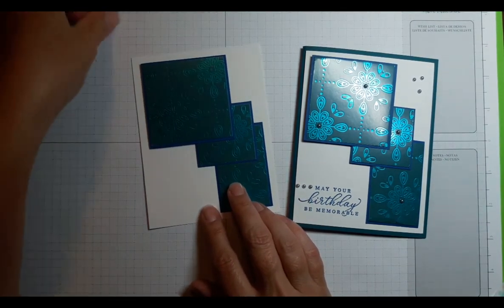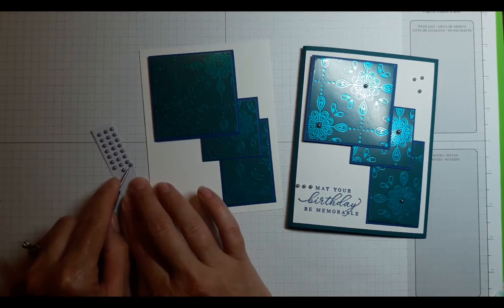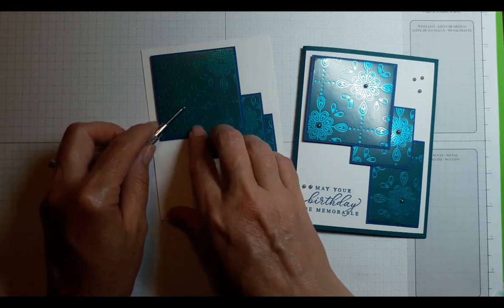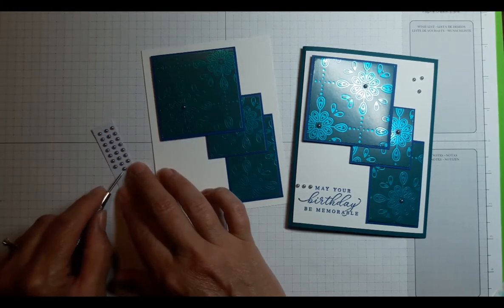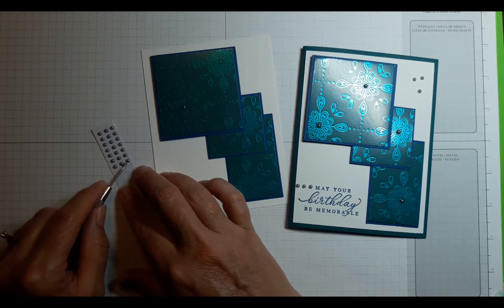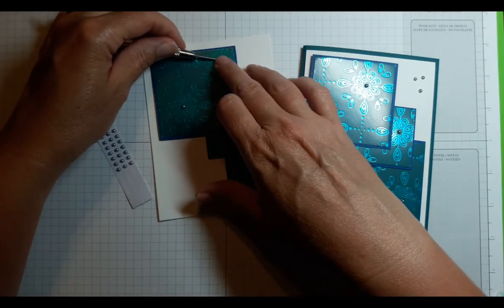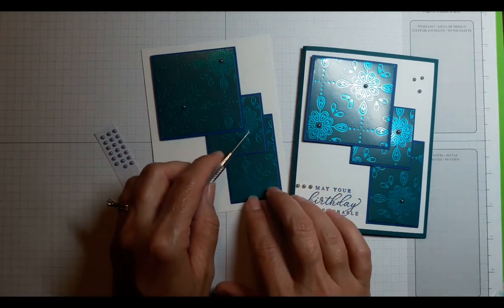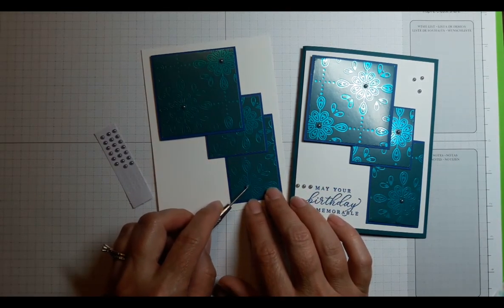Okay and then we've got these metallic pearls and I'm going to place some of these in the centers of these images that are on the designer series paper. Kind of using this paper piercing tool to help me out. That one is covered up so we don't need one there.